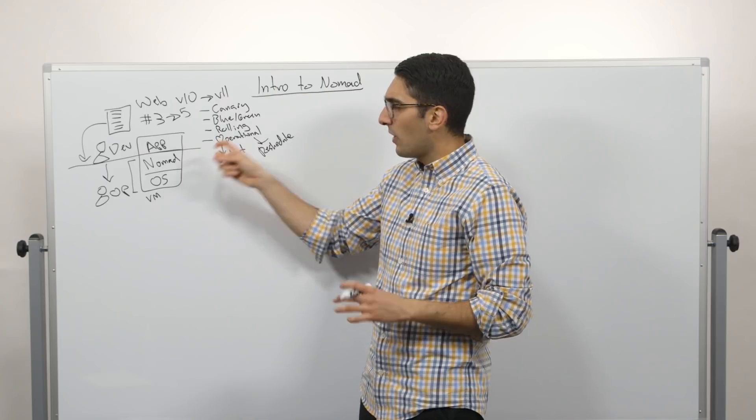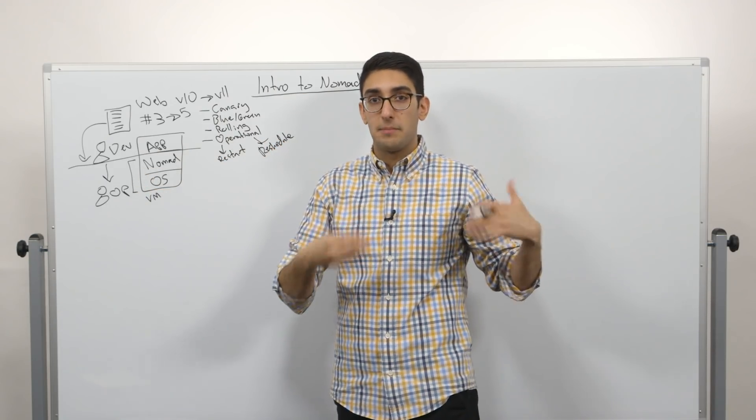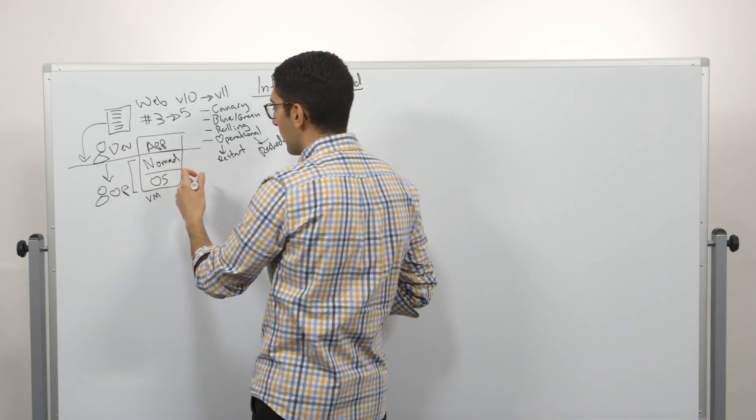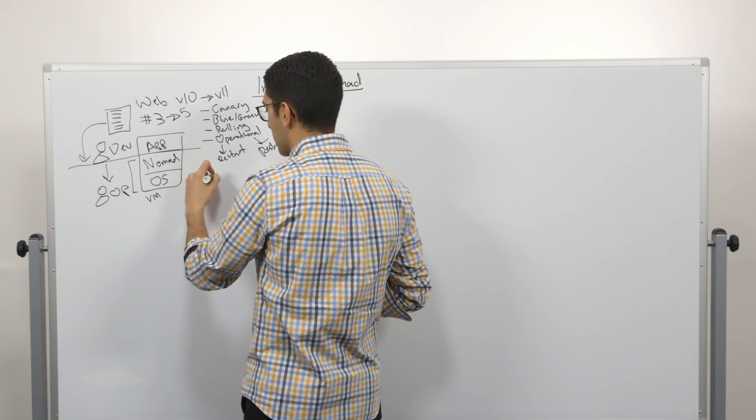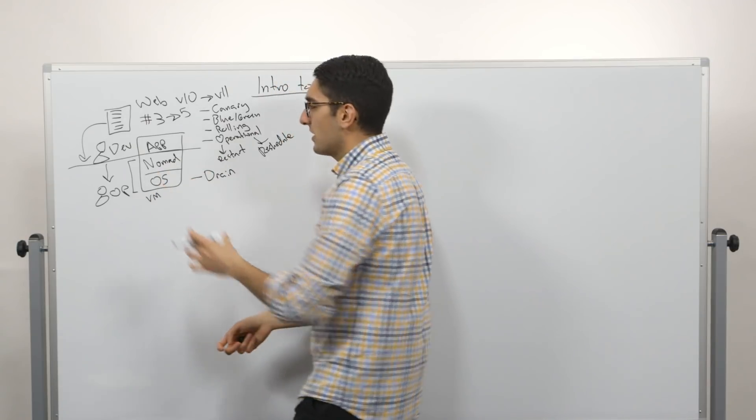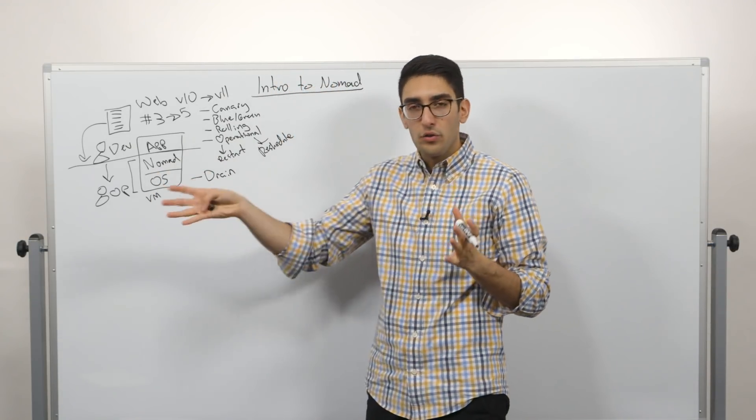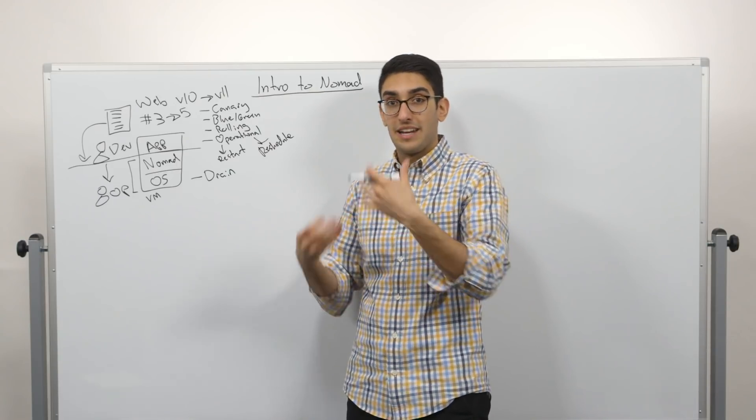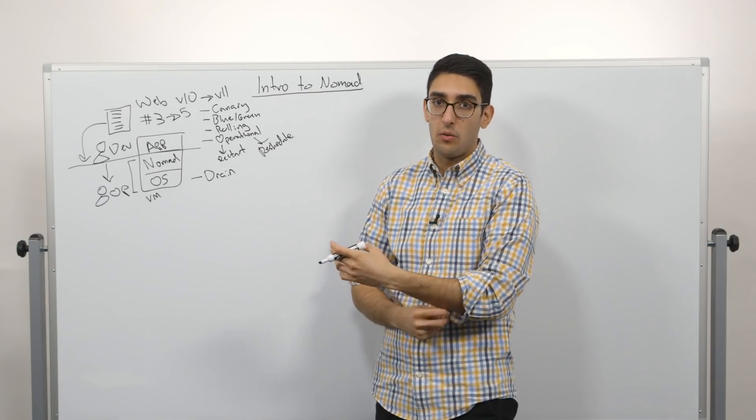They need to be able to come and say, these 10 machines, I want to take them out of the fleet so I can patch them and then bring them back. And so they have an API as well where they can come and say, I'd like to gracefully drain these 10 machines and over the next four hours, get all the workload off of them. And then I can take it out of service, do a patch, bring it in and re-allow workload to go on it.